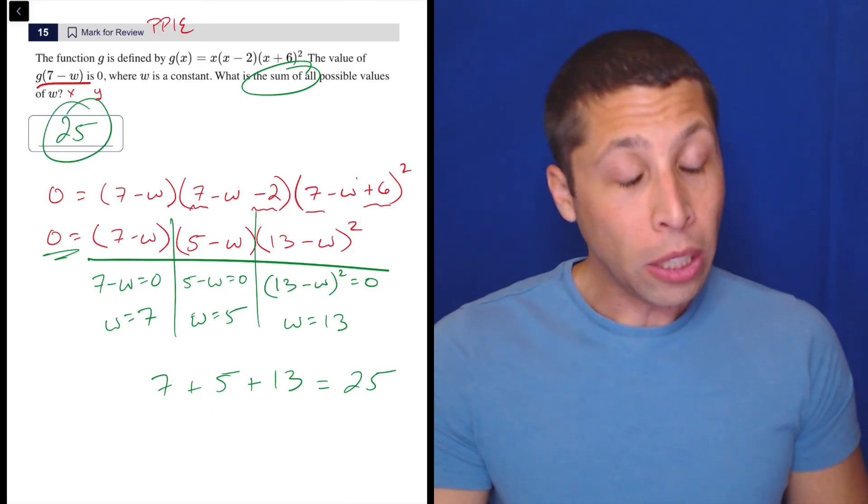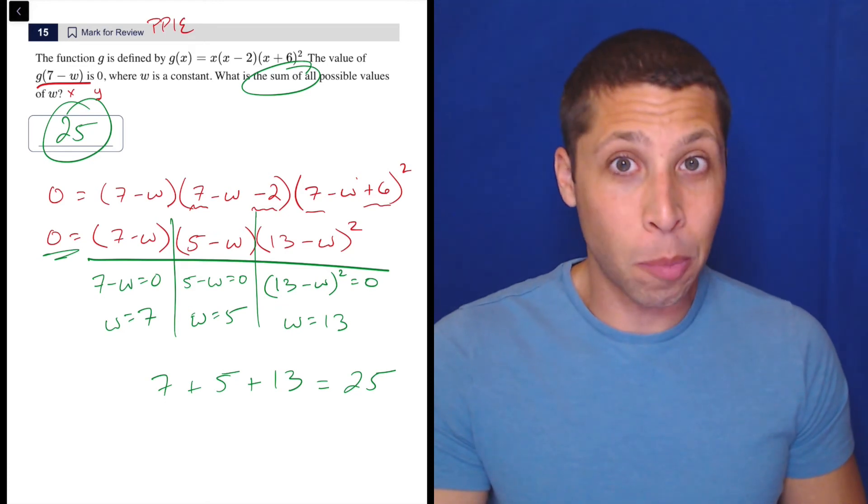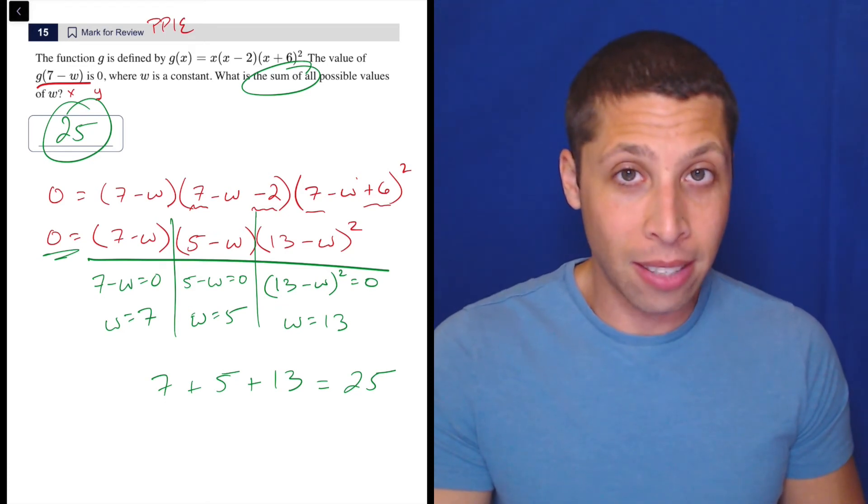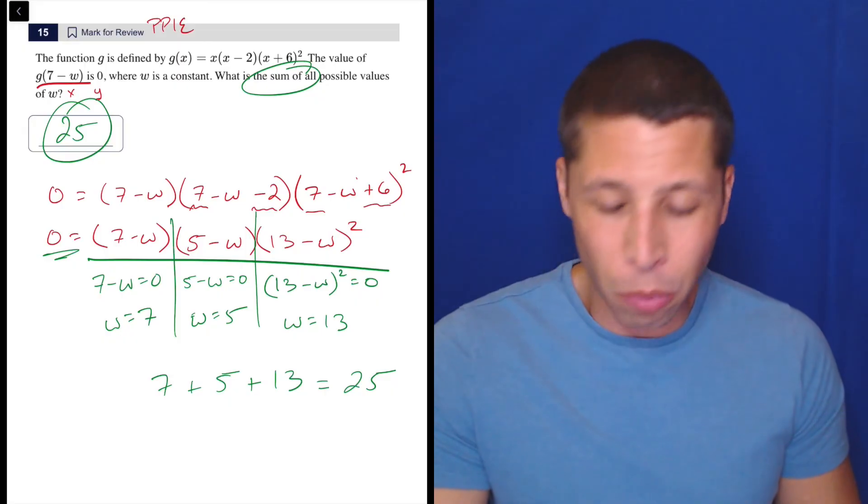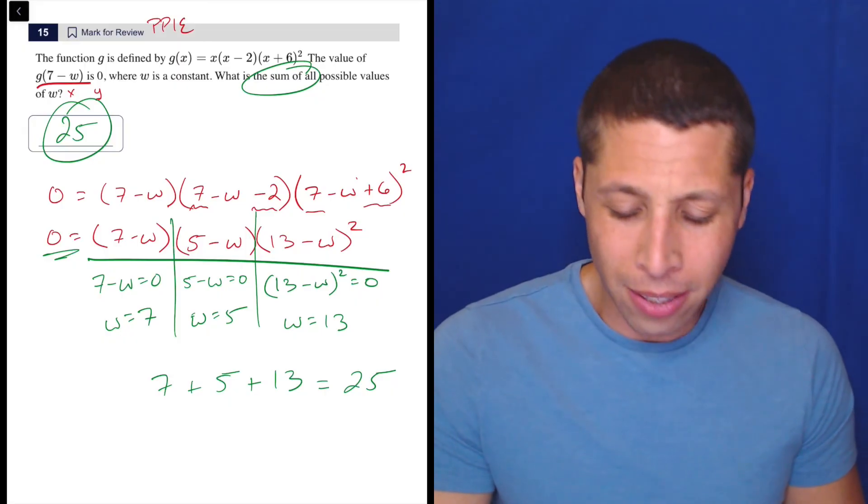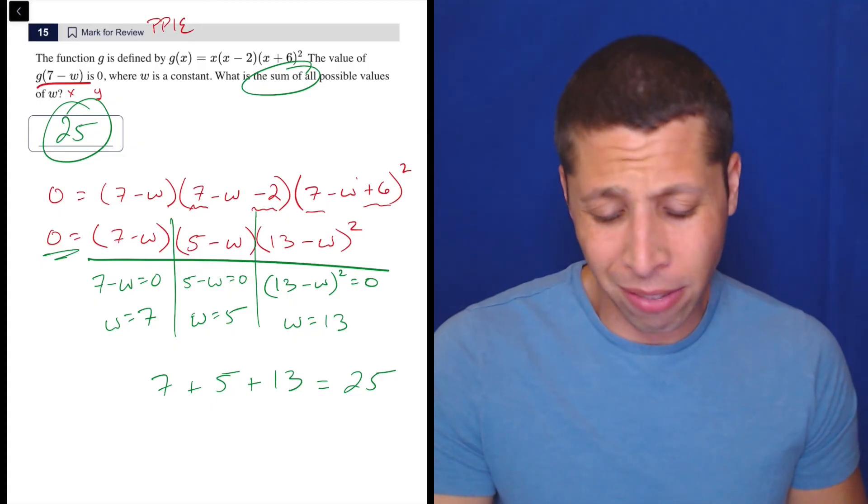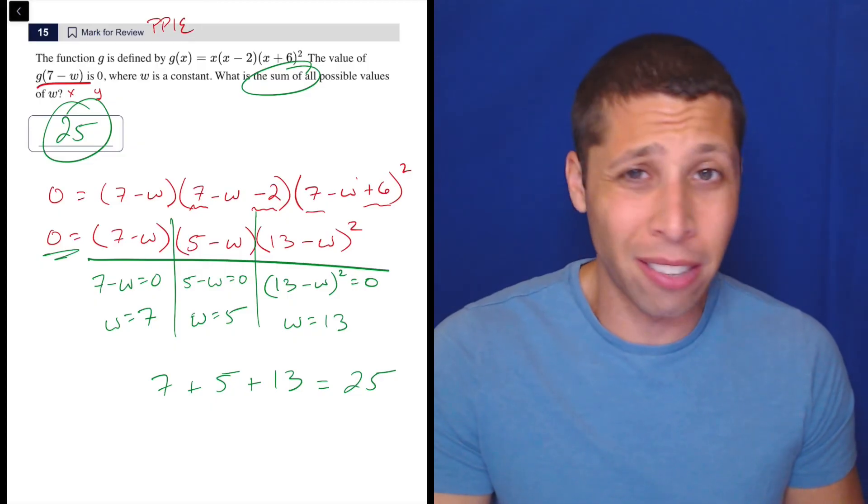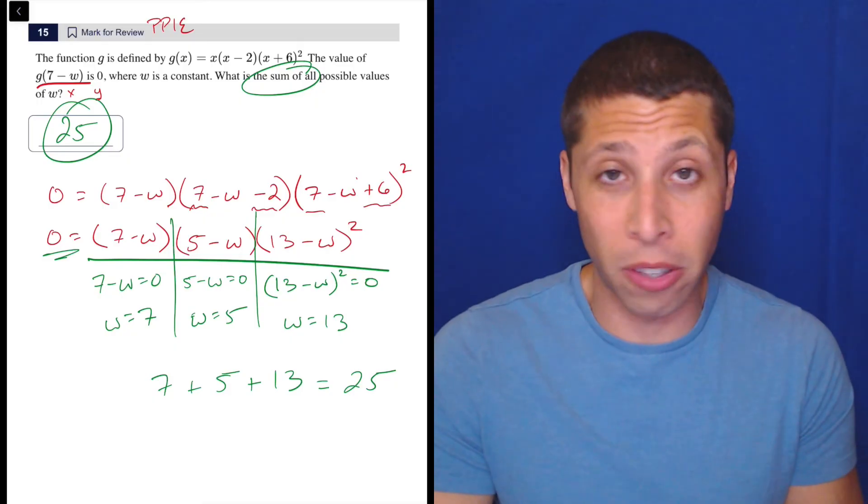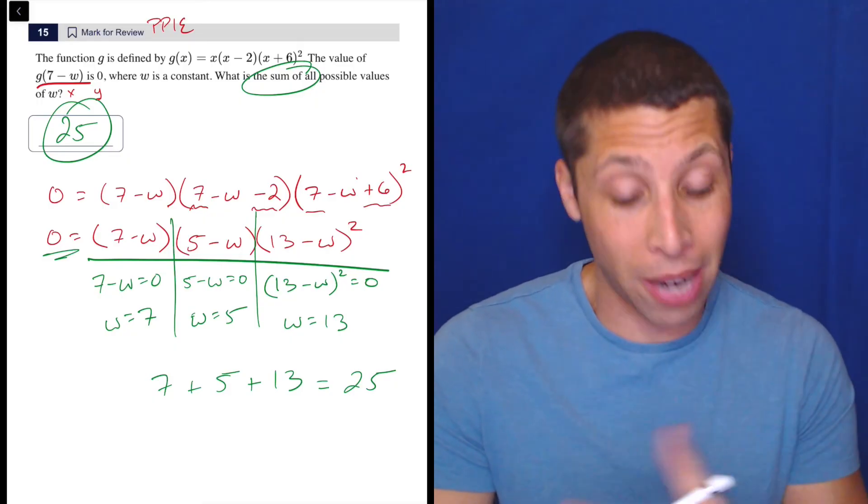Notice, no Desmos here. We could do it, but it's not going to tell you anything that's particularly groundbreaking. It's not going to really help too much. Maybe there's a way to do this where you plug the 7 minus w in and you just literally do g of 7 minus w, and then I don't know what you'd even do. You could play with a slider. I don't know. If you figure out some way to use Desmos here that's really nice and simple, go for it. But I don't see anything here.